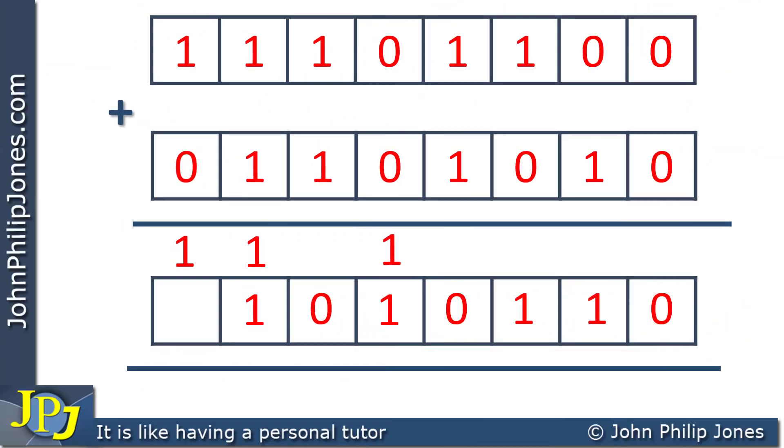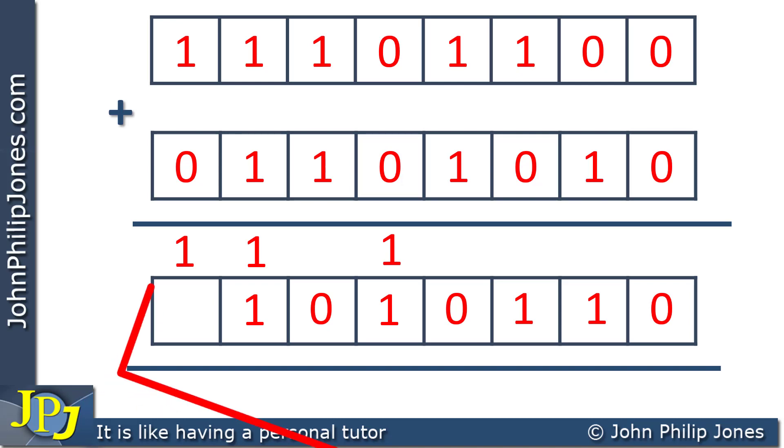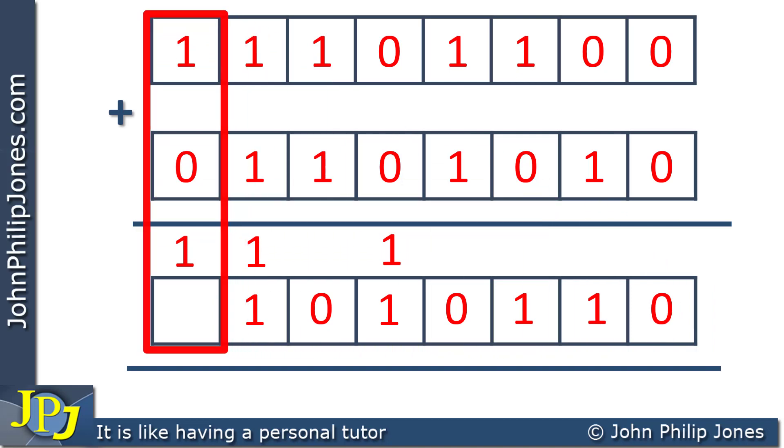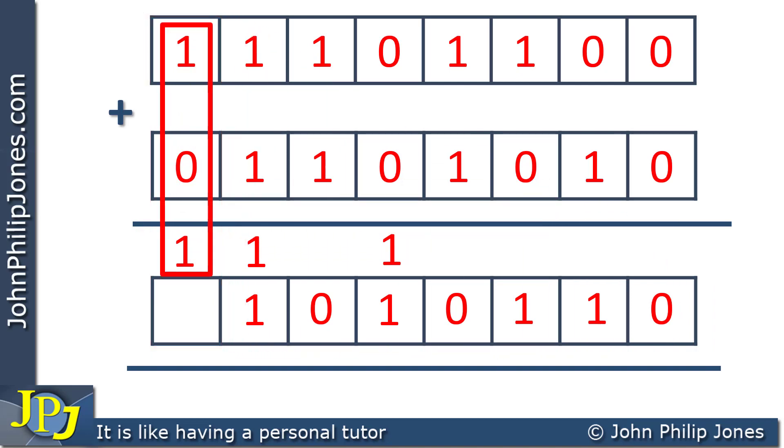Let's consider the addition of two different bytes. You can see in the results register, I've almost completed the addition. I've just left it for the last column. Let's have a look at the last column here. You can see I've got 1 plus 0 plus 1, which is 2. That means I will put down a 0 and carry the 1.